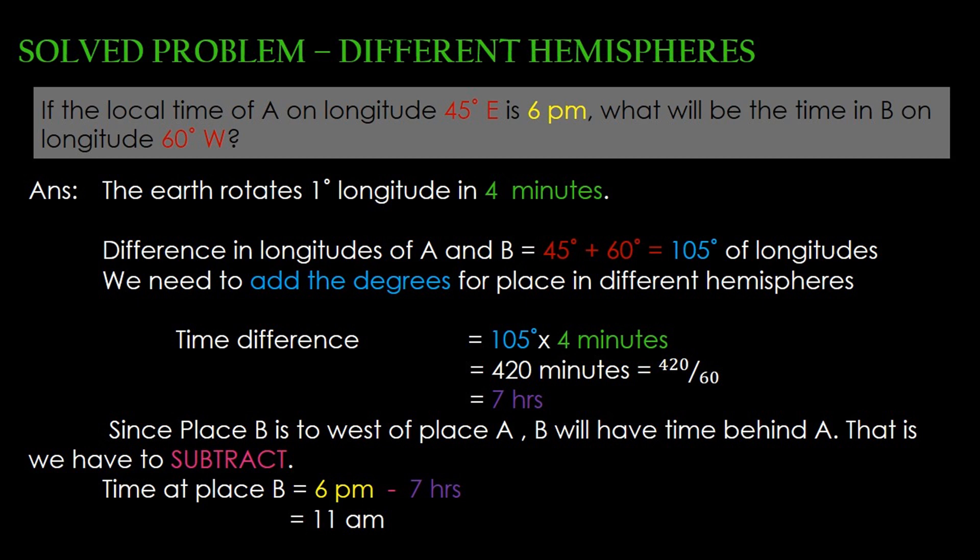Since place B is to the west of place A, we will have time behind A — that is, we have to subtract. Time at place B is equal to 6 pm minus 7 hours, that is 11 am.